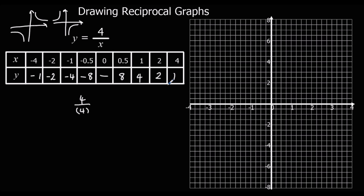So then we have to plot this on the graph, same as before. So the point (4, 1), then (2, 2), then (1, 4). Half goes with 8, so that point is plotted there. And 0 is undefined — we don't put anything there.